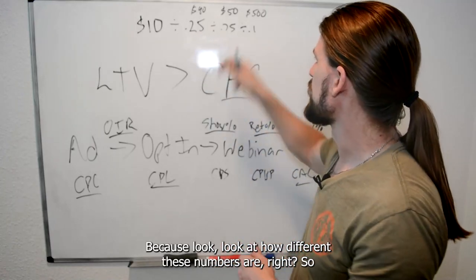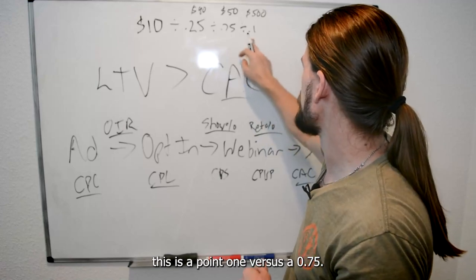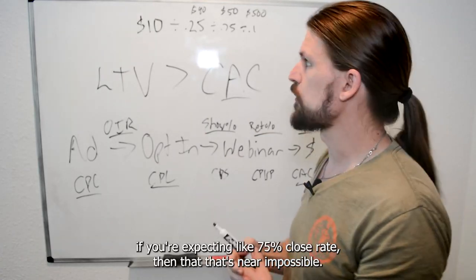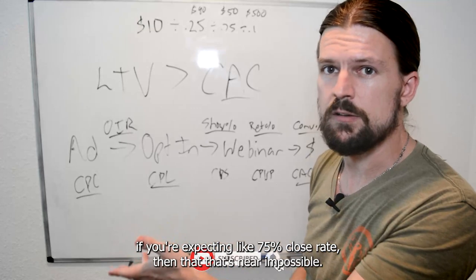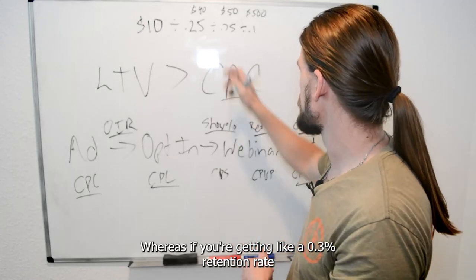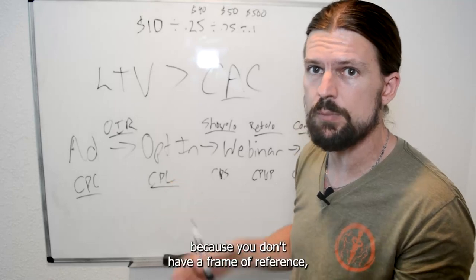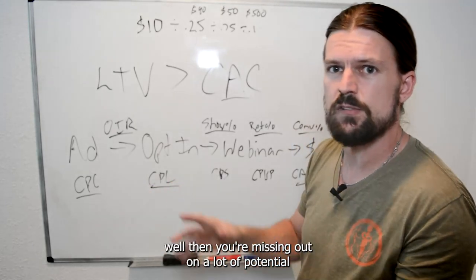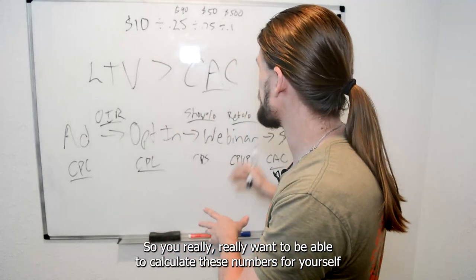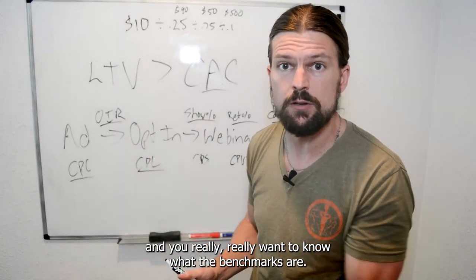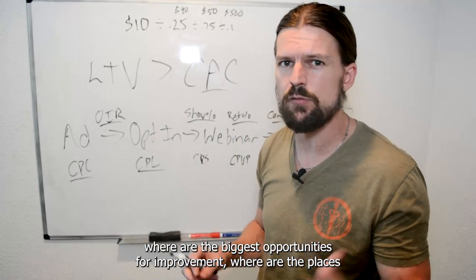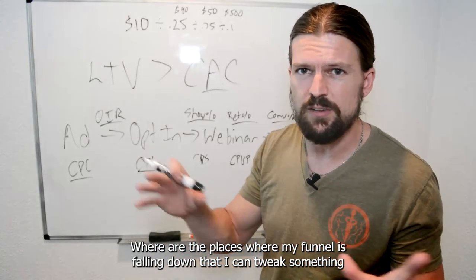You can see how different these benchmark numbers are — 0.1 versus 0.75 are very different rates. If you're expecting a 75% close rate, that's near impossible. But if you're getting a 0.3% retention rate and think that's fine because you have no frame of reference, you're missing out on a lot of potential — you could get it up to 75%. You really need to calculate these numbers and know the benchmarks so you can compare, find bottlenecks, and identify the biggest opportunities for improvement.